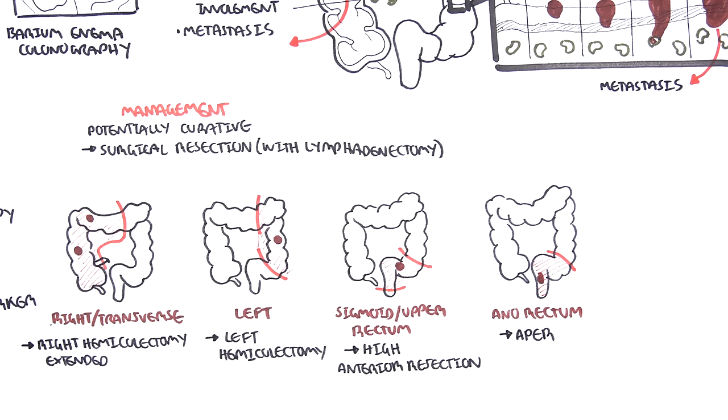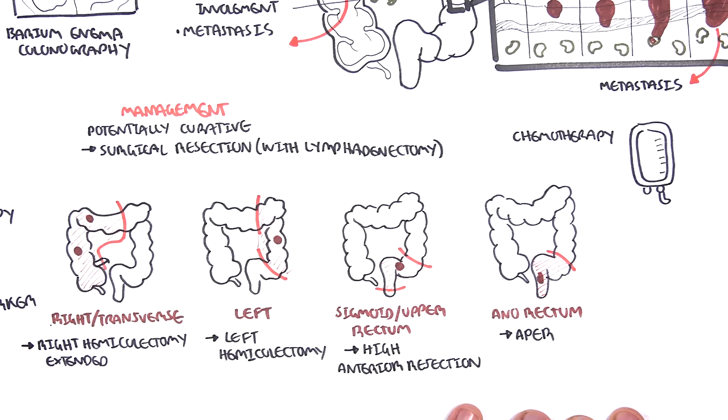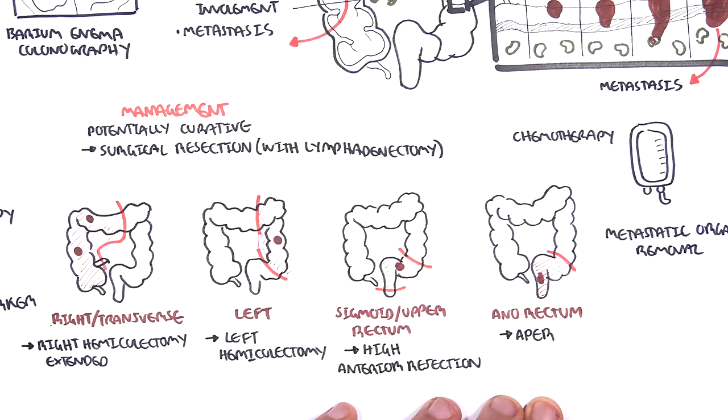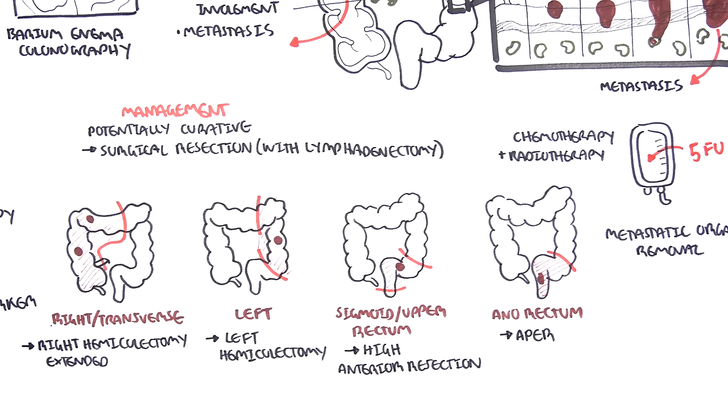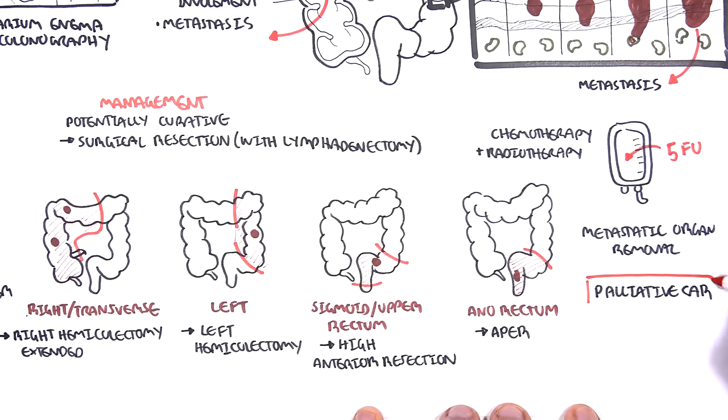Also, during this procedure, some patients may require having a temporary or even a permanent colostomy bag pouch, while others get the colon joined to the remaining parts of the colon, eventually. Of course, together with colectomy, there is adjuvant chemotherapy with or without radiotherapy. Chemotherapy usually involves 5-fluorouracil. If the cancer has metastasized, that organ can be potentially removed. And finally, there is also palliative care.